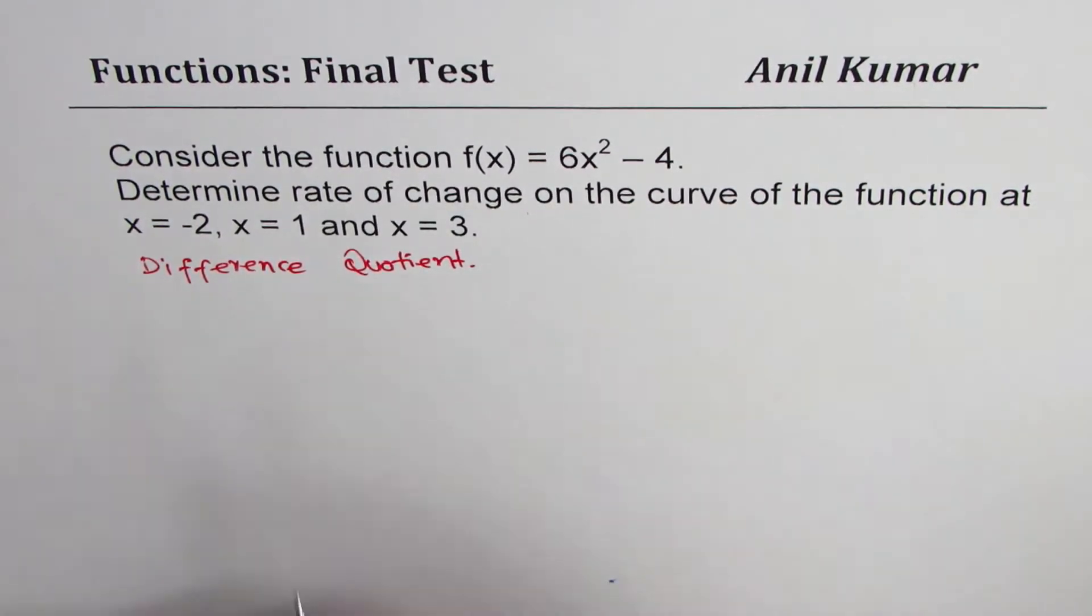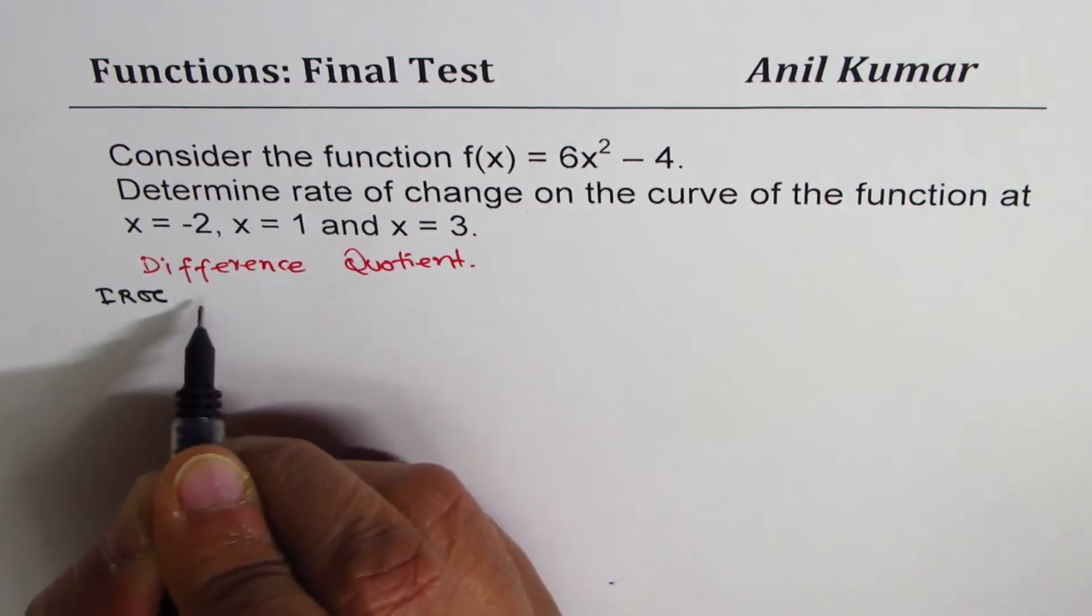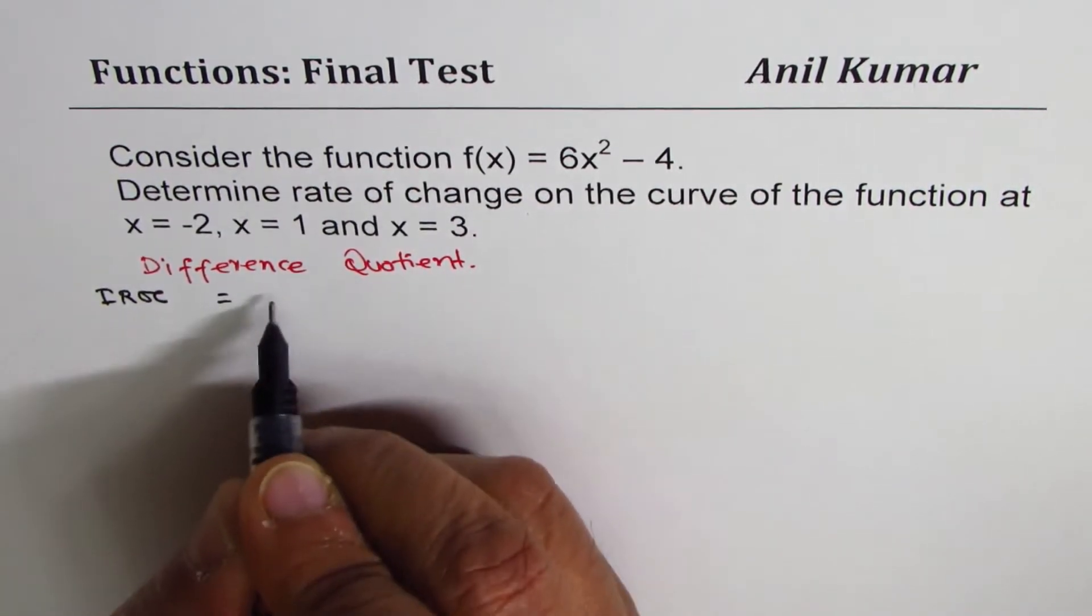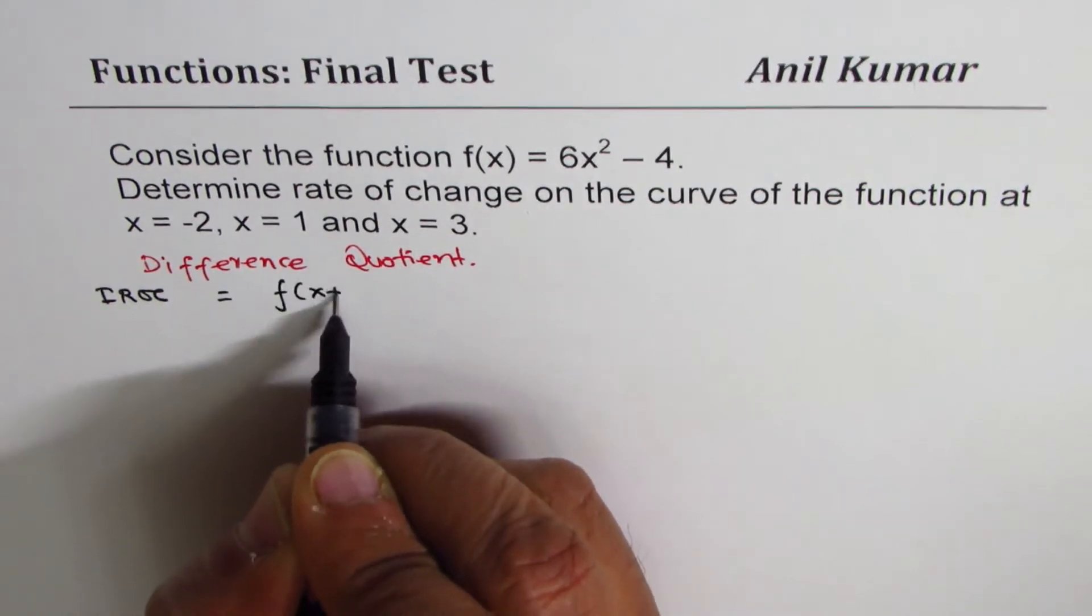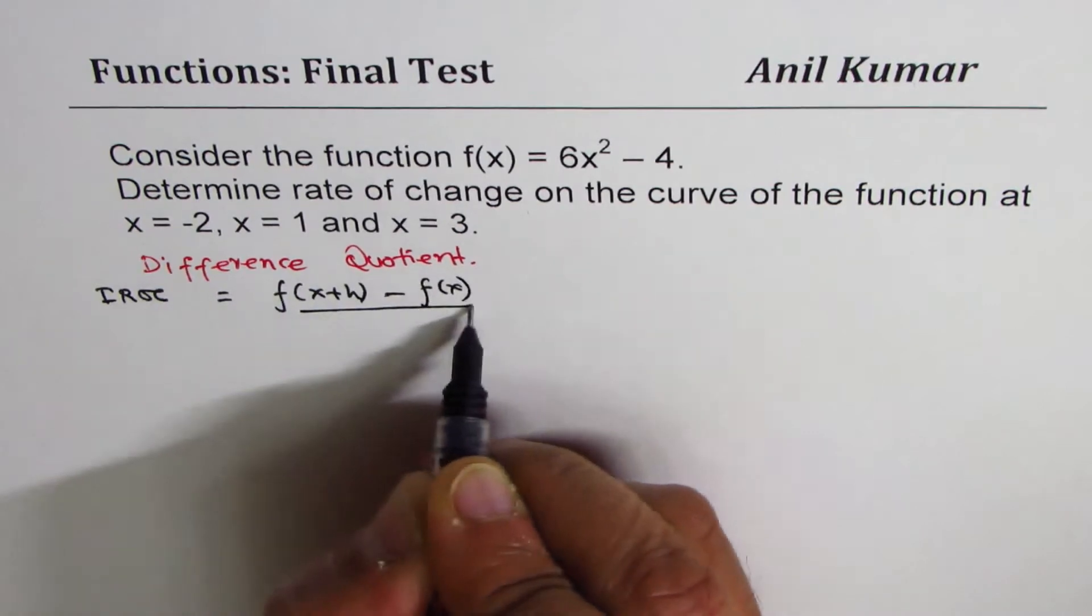That is to say that instantaneous rate of change is actually equal to f(x+h) - f(x) over h.